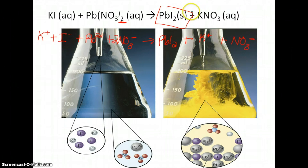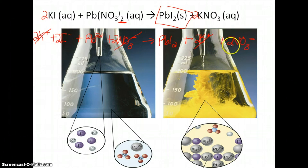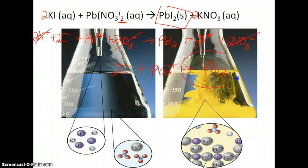It really helps if you have the equation balanced initially. We'll put a 2 here and a 2 there and throw all the balanced terms in — it helps a lot when we go to canceling. There's the complete ionic equation. Then you cancel things that are alike on both sides. We've got two K+ on both sides, and two NO3− on both sides — those cancel. We're left with 2 I− and Pb2+, and that makes PbI2. That's really what's happening in this reaction — you're forming this pretty yellow precipitate.